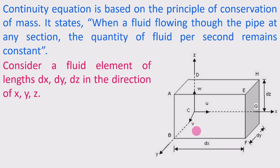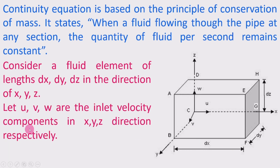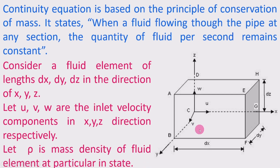Further, we take the velocities in the three directions. Let u, v, w be the inlet velocity components in the x, y, and z directions respectively — u along the x-axis, v along the y-axis, and w along the z-axis. Let rho be the mass density of the fluid element, which is constant in all directions.